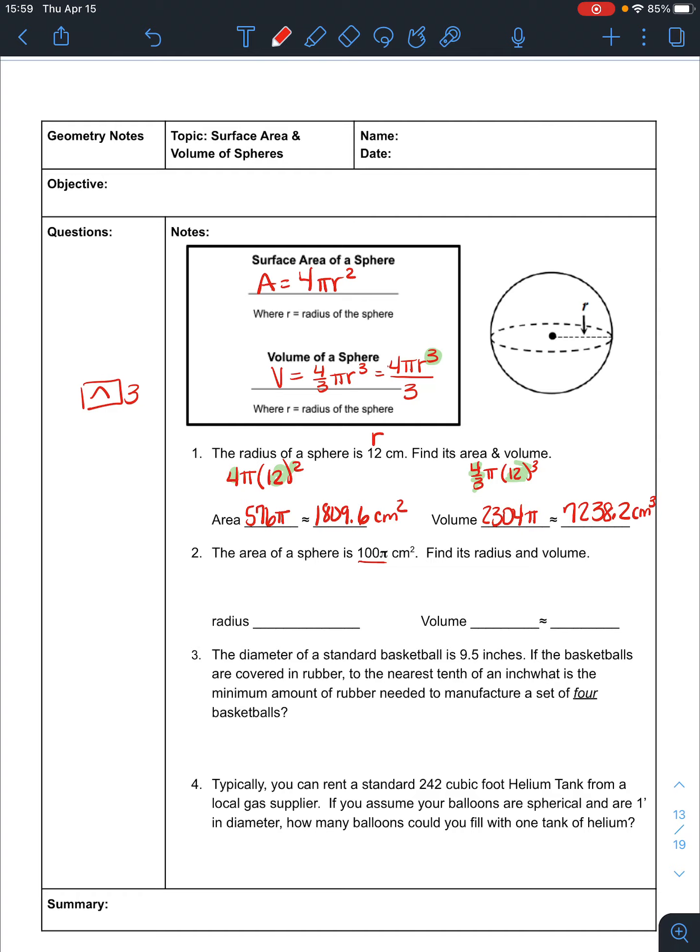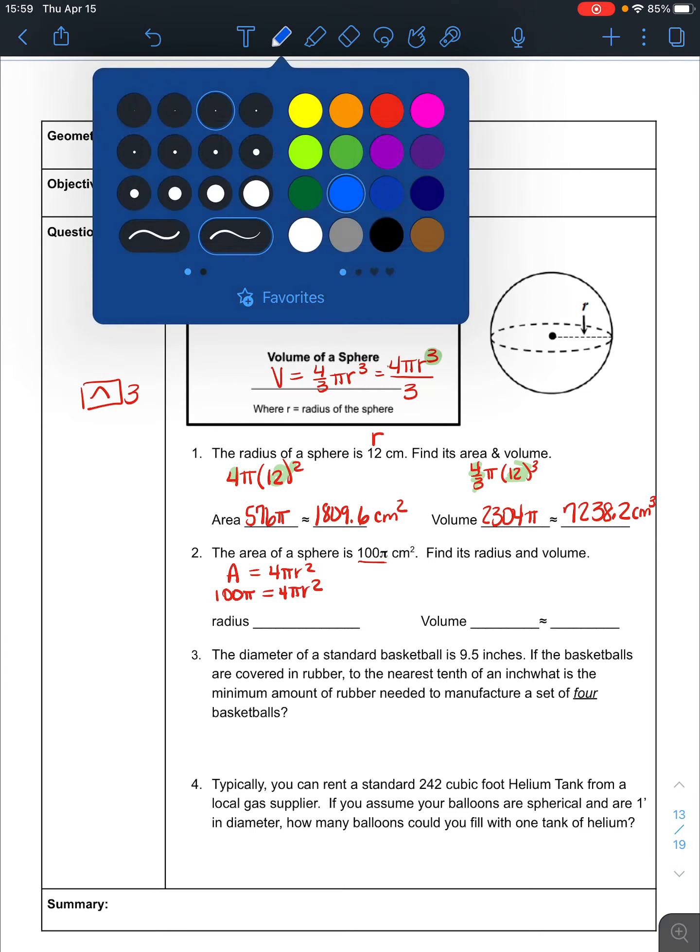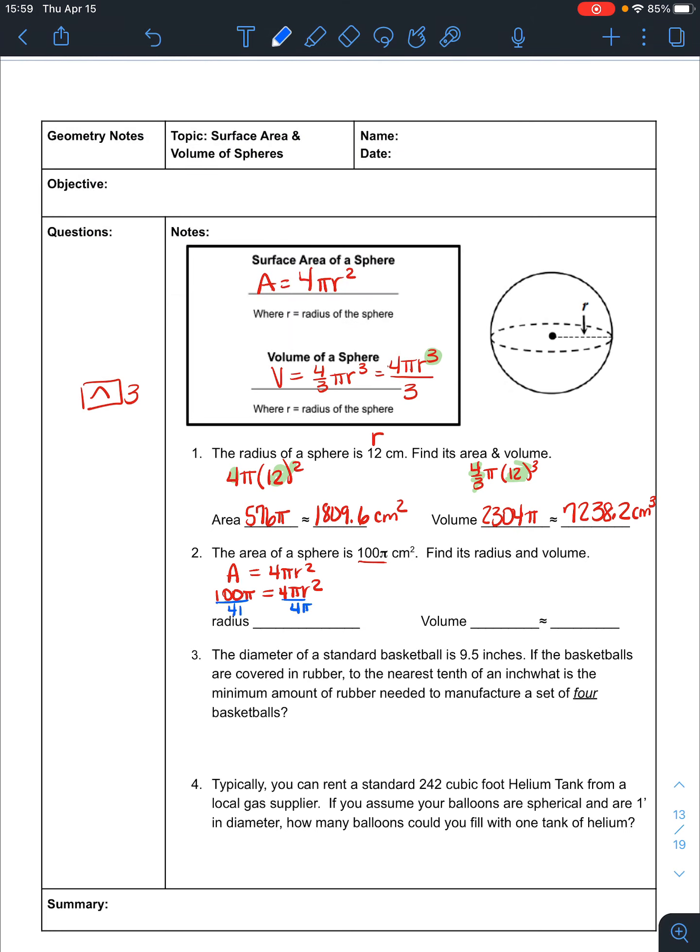The area of a sphere is 100 pi. As soon as I see area of a sphere, I'm going to write the equation: Area equals 4 pi r squared for a sphere. Now I plug in what I know. The area is 100 pi, so 100 pi equals 4 pi r squared. I want to get r squared by itself, so I divide by 4 pi on both sides. Don't worry about typing the pi's in the calculator because they cancel out. 100 divided by 4 is 25, so r squared equals 25. The radius is 5 centimeters.